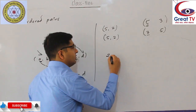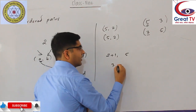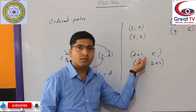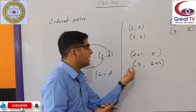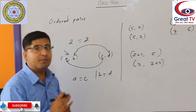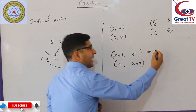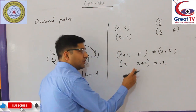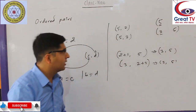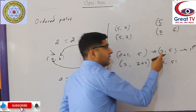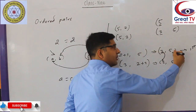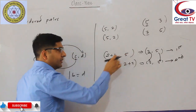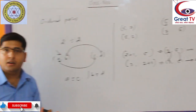Let's see another example: (2+1, 5) and (3, 2+3). The x-component of the first ordered pair is 2+1, which simplifies to 3, and y-component is 5. The x-component of the second ordered pair is 3, and y-component is 2+3, which simplifies to 5. The x-components are equal (3=3) and the y-components are equal (5=5). So (2+1, 5) and (3, 2+3) are equal ordered pairs. Are you clear about equal ordered pairs?